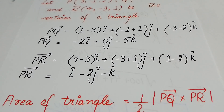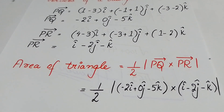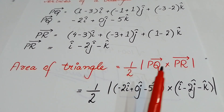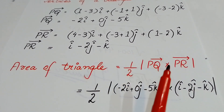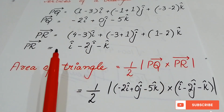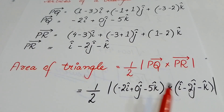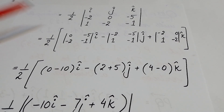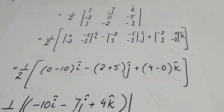I have written in red marker the area of a triangle formula. The area of a triangle is 1/2 times the magnitude of PQ cross PR. This is the cross product — the PQ and PR values will go into the cross product. The cross product means there will be i, j, k values in a 3×3 determinant, with PQ in the second row and PR in the third row. We need the magnitude of the cross product.